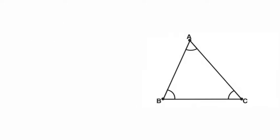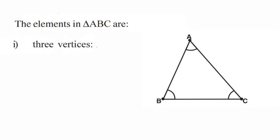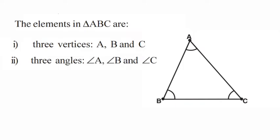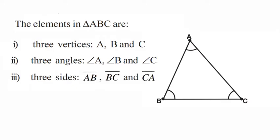Look at the adjacent figure. The elements in triangle ABC are: three vertices A, B, and C; three angles — angle A, angle B, and angle C; and three sides — AB, BC, and CA.